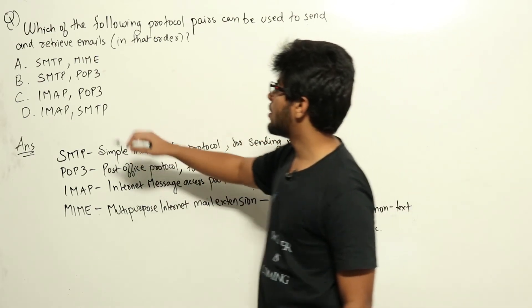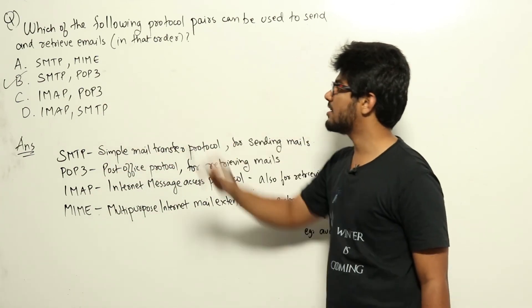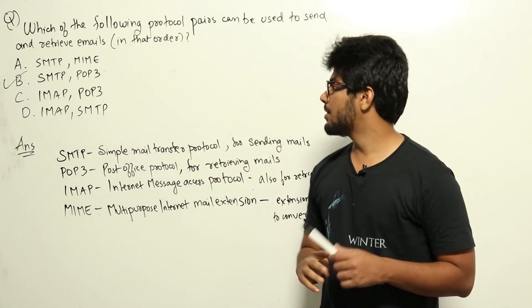Looking at the options, you will see option B is the only correct one. SMTP is used to send, POP3 is used to retrieve emails. B is the right answer here.